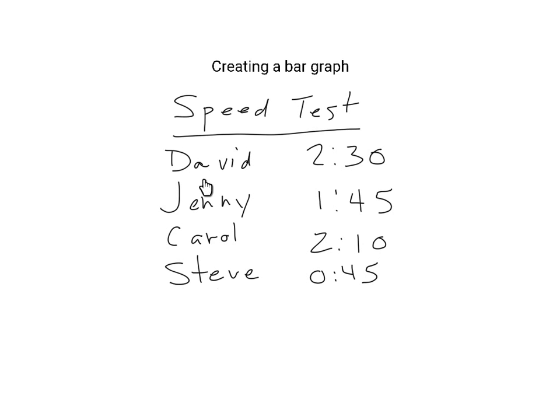This is how long it took them: David bounced the ball 50 times and it took him two minutes and 30 seconds. Jenny did it in 1 minute 45 seconds. Carol did it in 2 minutes and 10 seconds. And Steve bounced the ball 50 times in a whopping 45 seconds — because he cheated, probably.